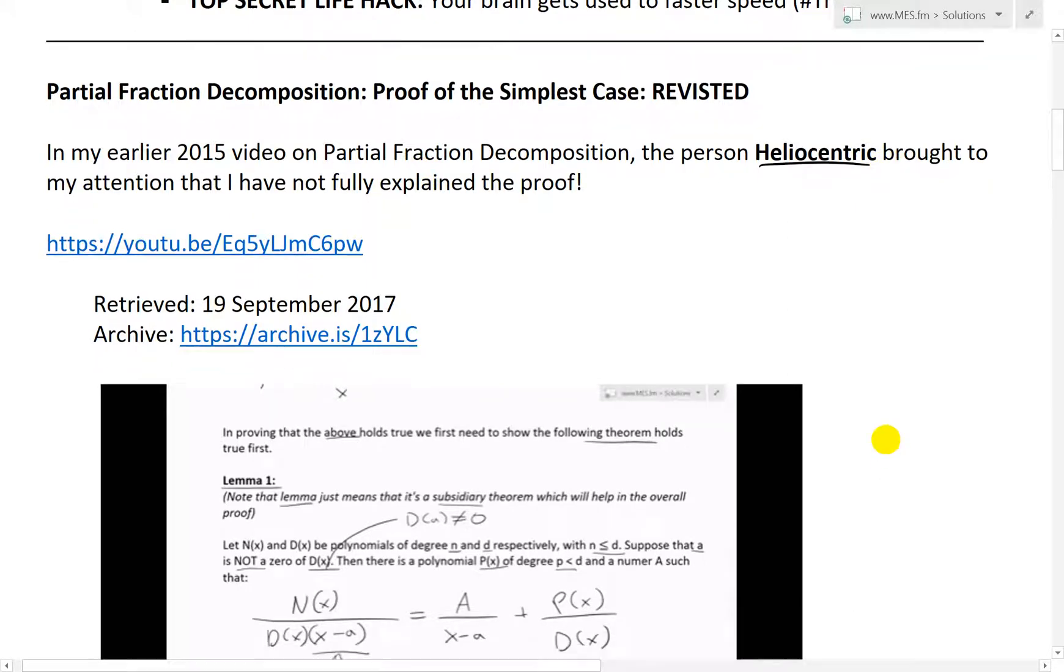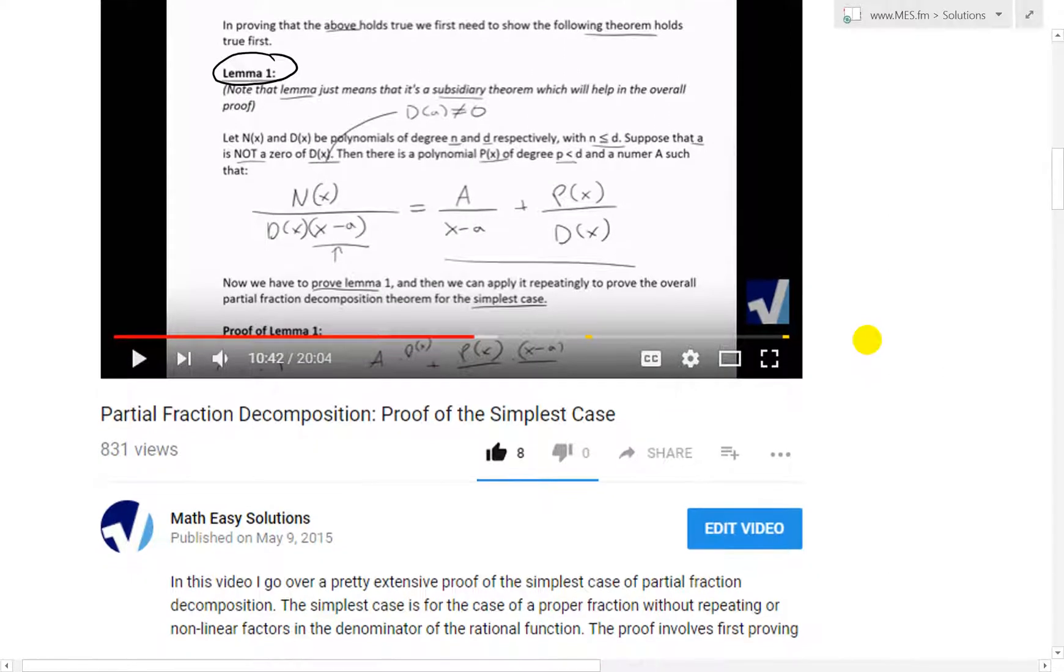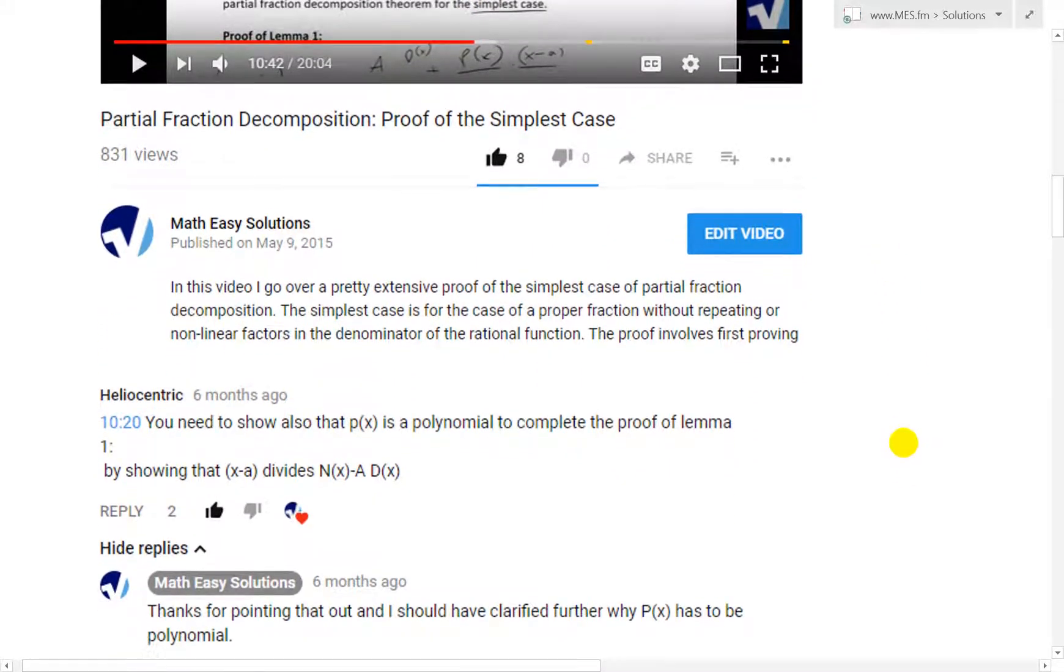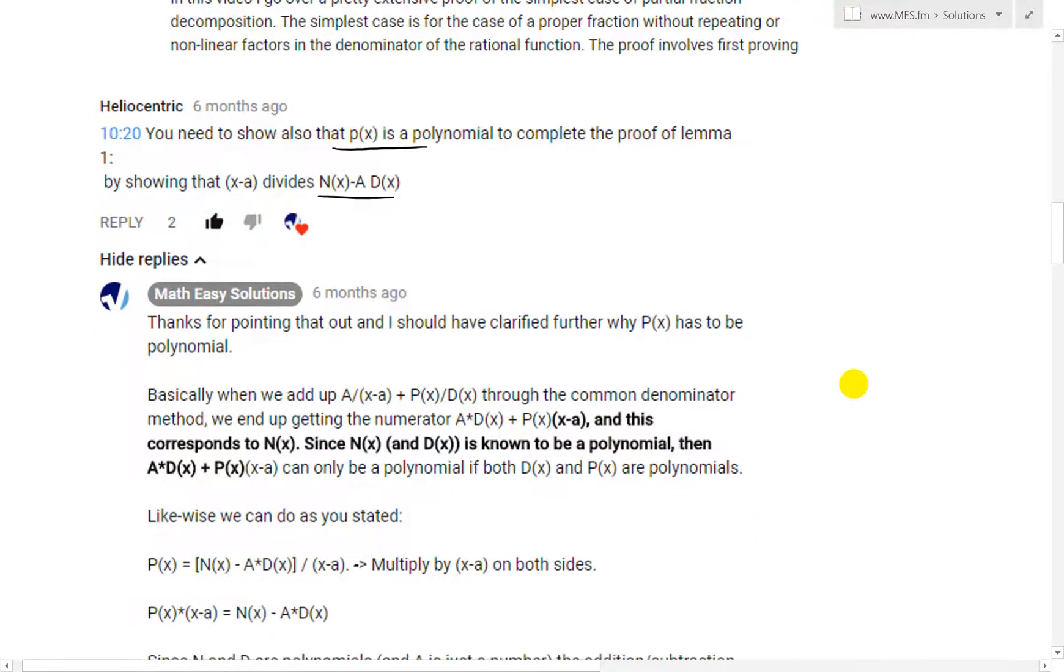Basically, in my earlier 2015 video on partial fraction decomposition, the user Heliocentric brought to my attention that I've not fully explained the proof and that was part of the proof. I did a lemma, which is just a subsidiary theorem that helped in the overall proof, and then I stated that there is a polynomial P(x), but I never actually proved that it was in fact a polynomial. Make sure to watch that video, link in the description below to get some more context. Heliocentric replied to show also that P(x) is a polynomial to complete the proof of the lemma by showing (x-a) divides N(x) - a*D(x).